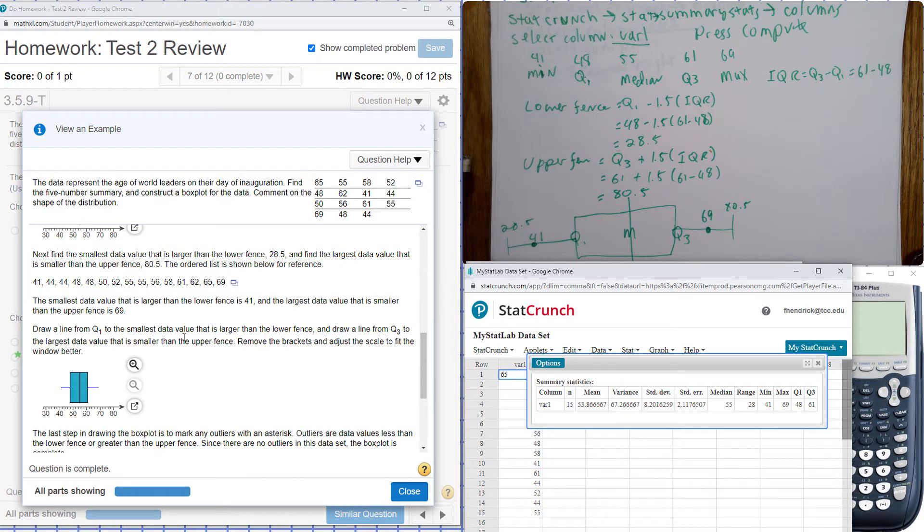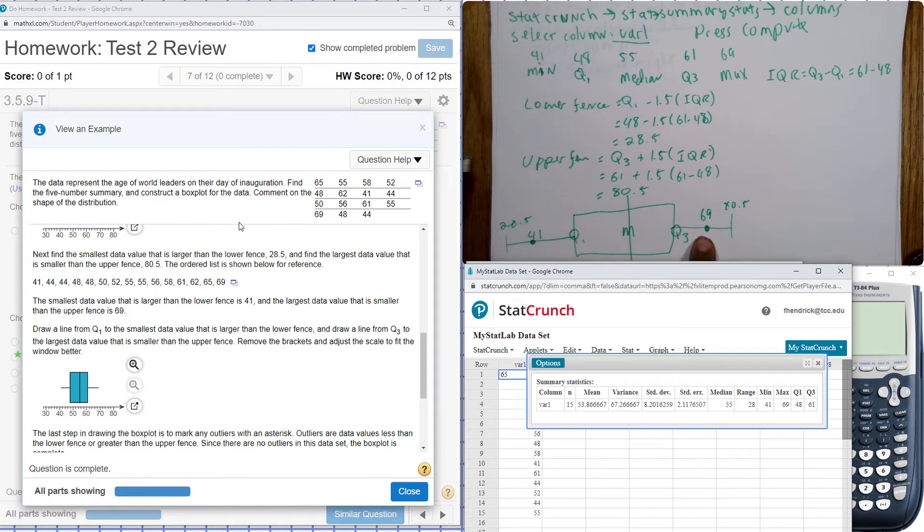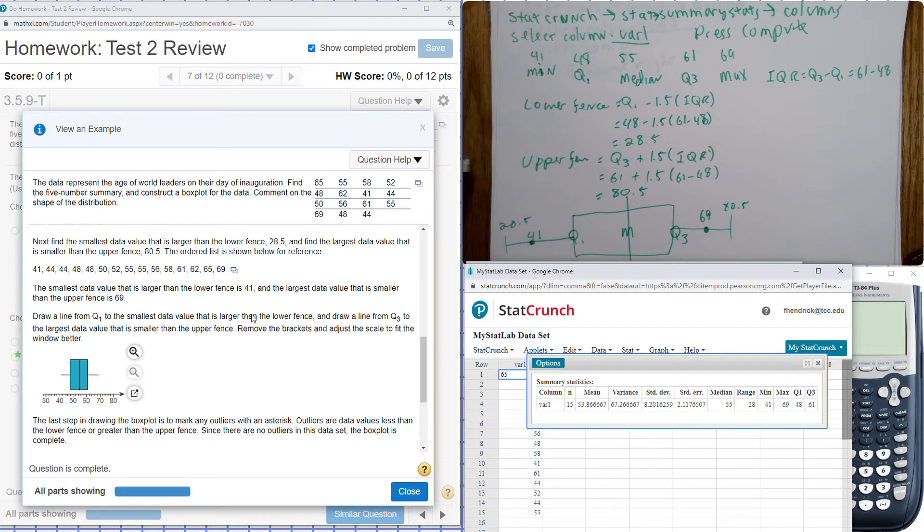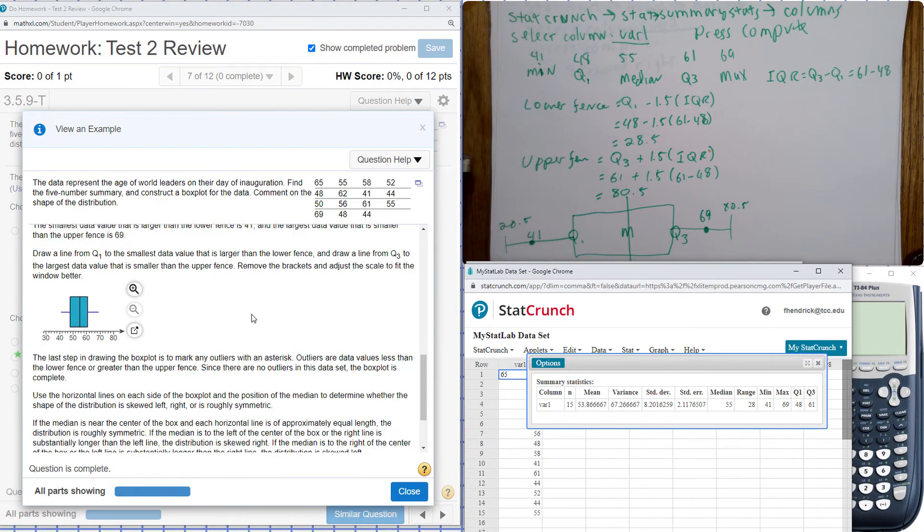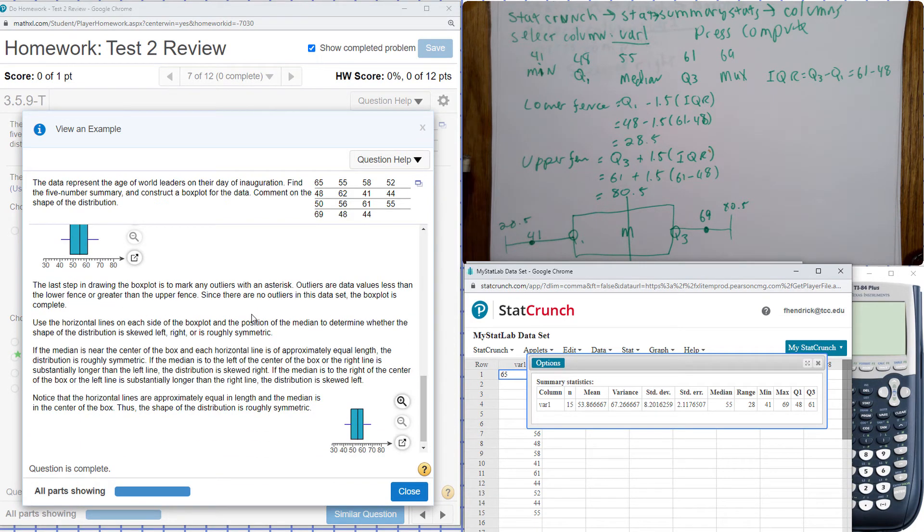Draw a line from Q1 to the smallest data value, and from Q3. So you have the lines drawn there too. And I have a line here to show the median. I guess we have a median at 55.